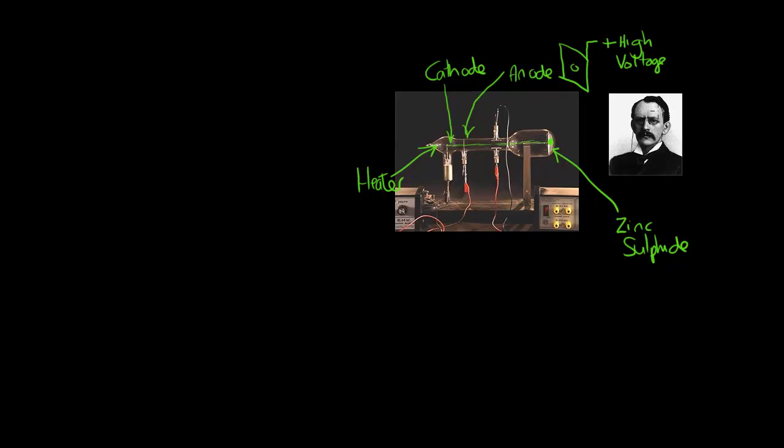A gentleman called JJ Thompson carried out this experiment and he applied an electric field at right angles to this cathode ray. If you can imagine we've got a plate here and a plate there. This one may be positively charged and this guy may be negatively charged. And what JJ Thompson discovered was that this cathode ray was deflected towards the positive. And hence, he deduced that these are negatively charged particles.